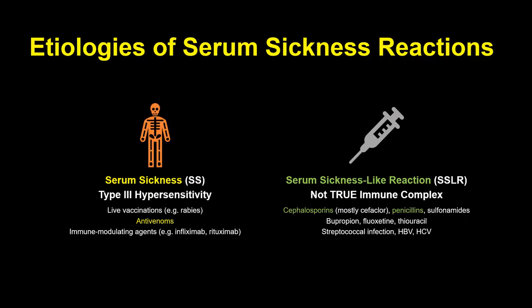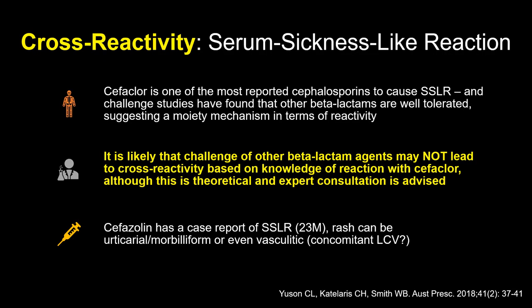Where classical serum sickness is caused mostly by large proteinaceous molecules like antibodies or antivenoms, the SSLR is caused by smaller molecules like antibiotics. The agent with the most supporting literature for SSLR is the cephalosporin cefaclor — a second-generation cephalosporin not used anymore in Canada, but which can appear on a patient's allergy label from a legacy admission, possibly during childhood. Other agents include some antidepressants and infections like streptococcal infections. Importantly, these delayed reactions are not class-wide cross-reactive — patients who received other cephalosporins post-cefaclor SSLR failed to develop the reaction.